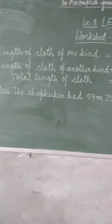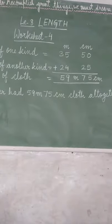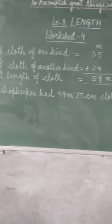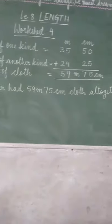Now see, length of cloth of one kind: 35 meter, 50 centimeter. Length of cloth of another kind: 24 meter, 25 centimeter.